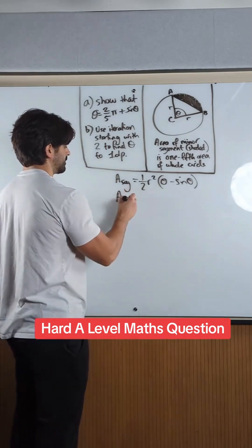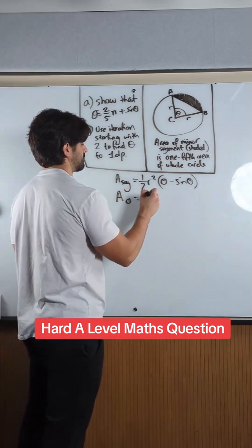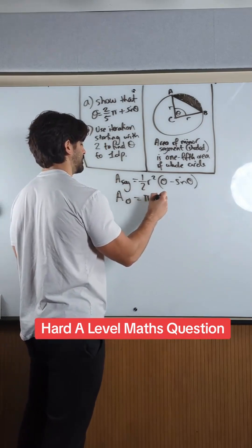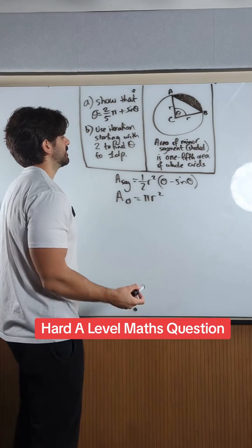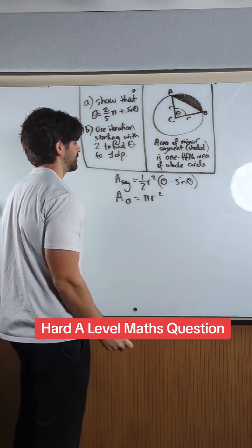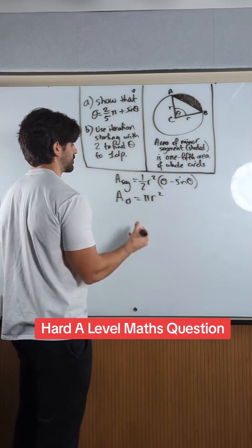The circle is just π r squared. It's saying that this area is 1/5th of this one. So I'm going to say 1/5th of this equals this.